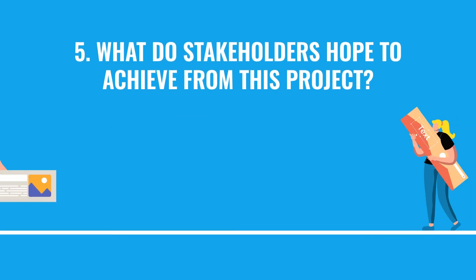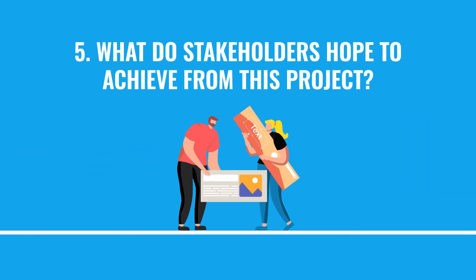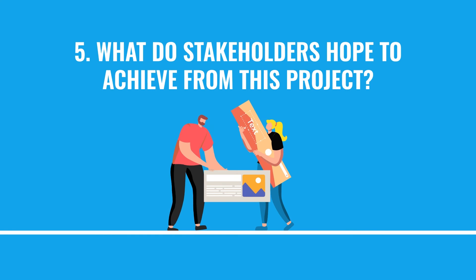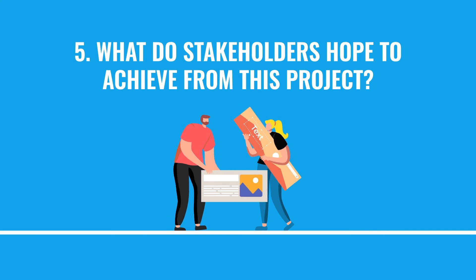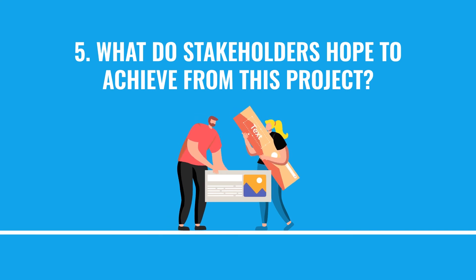Number five: what do stakeholders hope to achieve from this project? This is very important because if you have different people coming with different ideas of what they want to achieve and they don't align, problems are sure to arise.